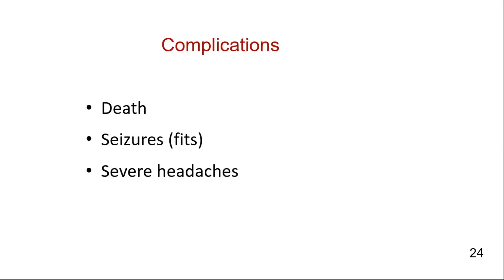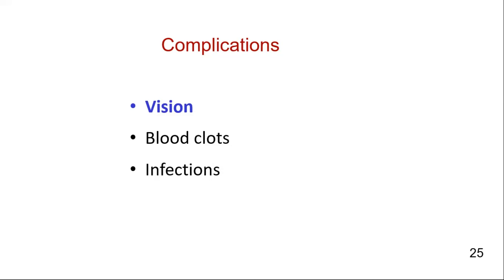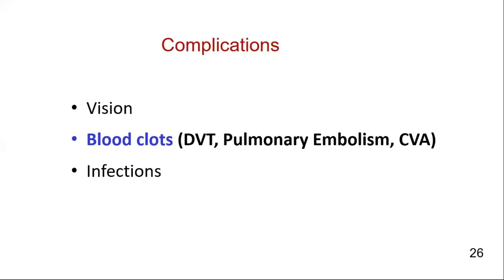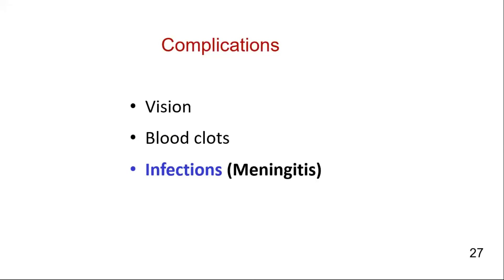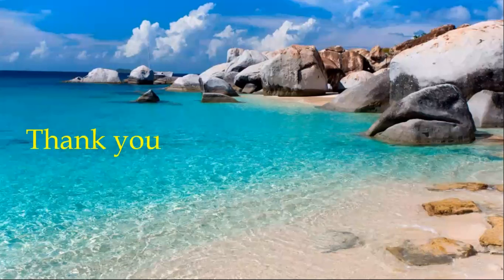If not treated properly and in time, cavernous sinus thrombosis will lead to serious complications. Up to one in three people with the condition may die. Some survivors are left with ongoing symptoms such as seizures and severe headaches. It can also cause problems with vision, blood clots, and infections. Some people have a degree of permanent visual impairment, although permanent blindness is uncommon. There is also a risk of blood clots developing elsewhere in the body — in the legs (deep venous thrombosis), lungs (pulmonary embolism), or brain (stroke). Complications can also include meningitis if the infection spreads beyond the cavernous sinuses. Thank you. Wish you best of luck.